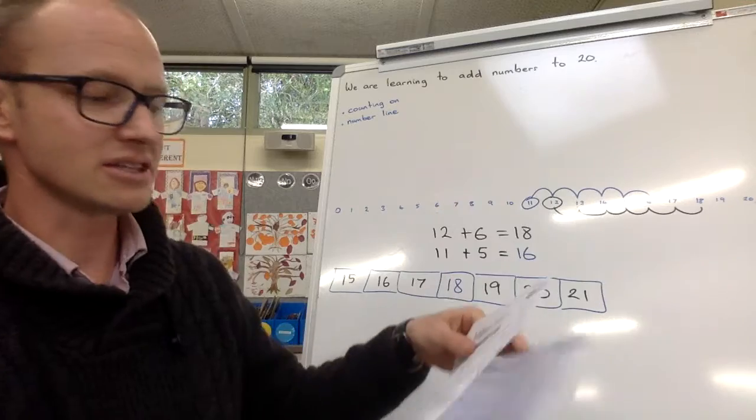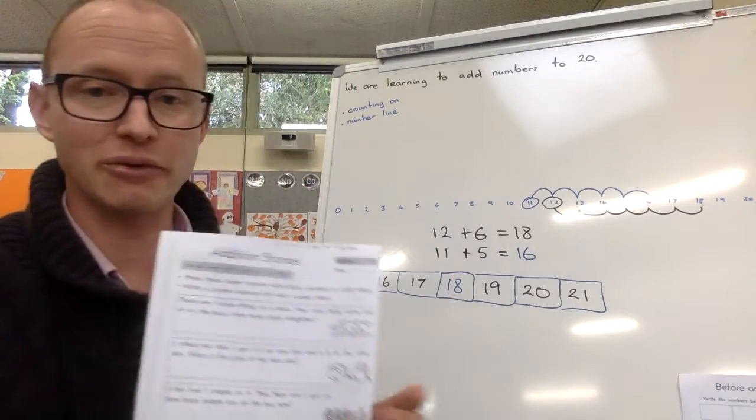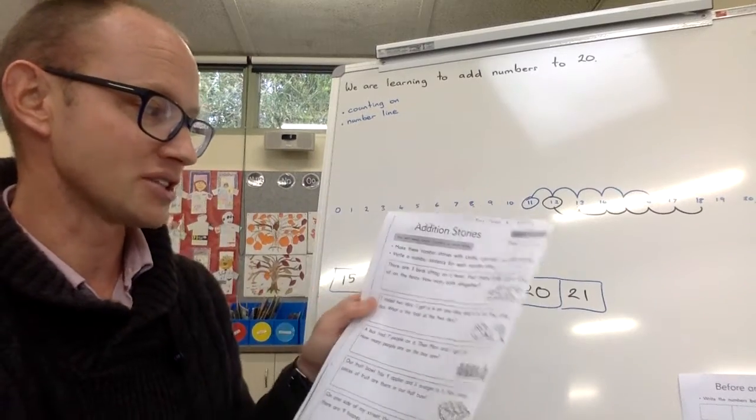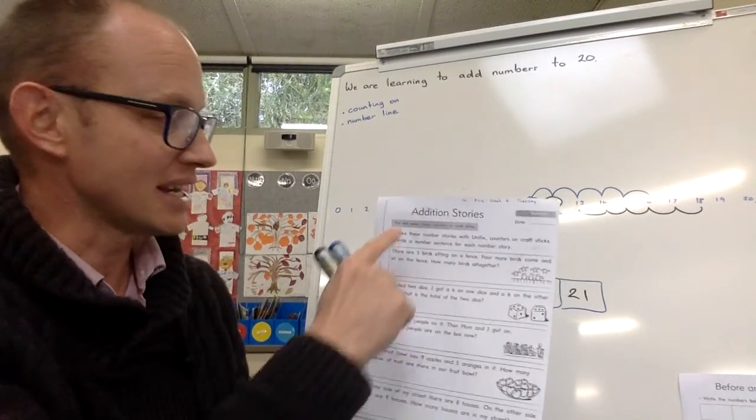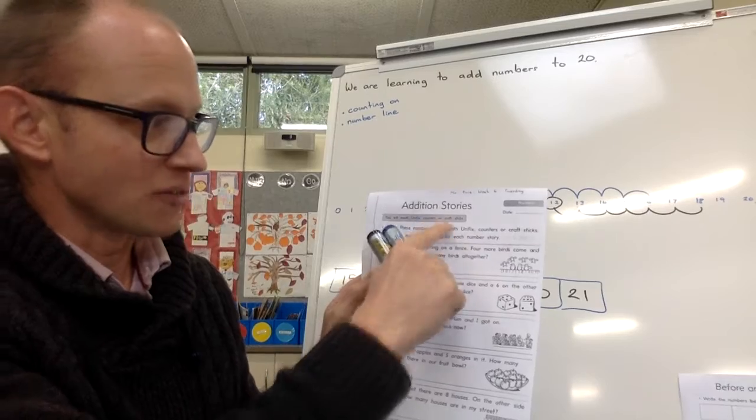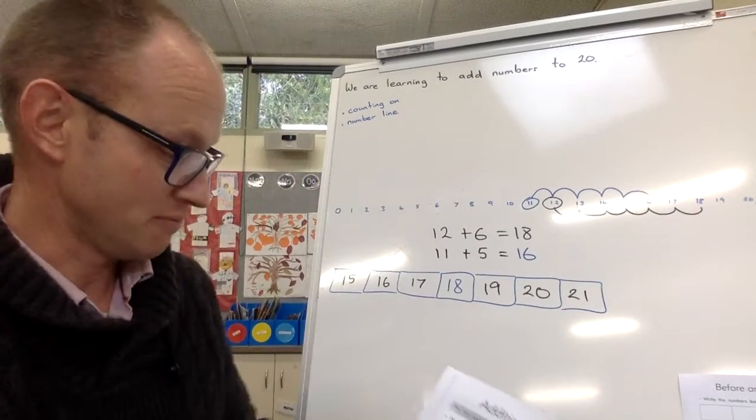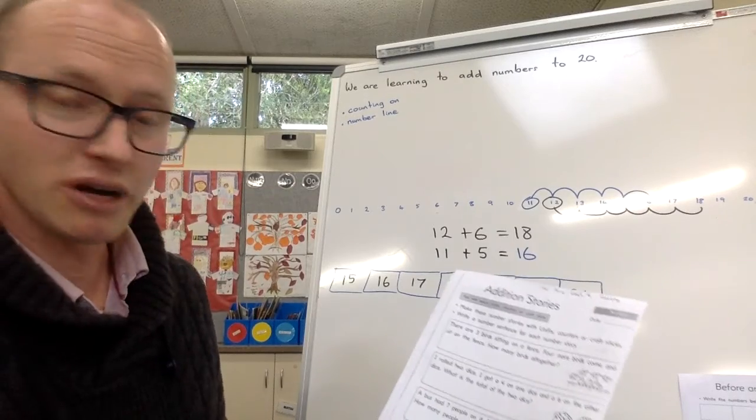This one here is a little bit trickier. And this one here you might need to get someone to help you read some of the questions. But I'm going to go through the first one to help you understand what we're looking at. Now it says here to get some unifix, some counters with acrostics. You could just use like a bundle of pencils would be fine. So, first one here.